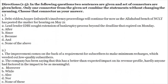Let's move to question number 1. Direction 1 to 5: in the following questions two sentences are given and a set of connectors is given below. Only one connector from the given set combines the statements without changing the meaning. Choose the connector as your answer. We have to join the two sentences with appropriate connectors — after, since, because — these all are conjunctions.